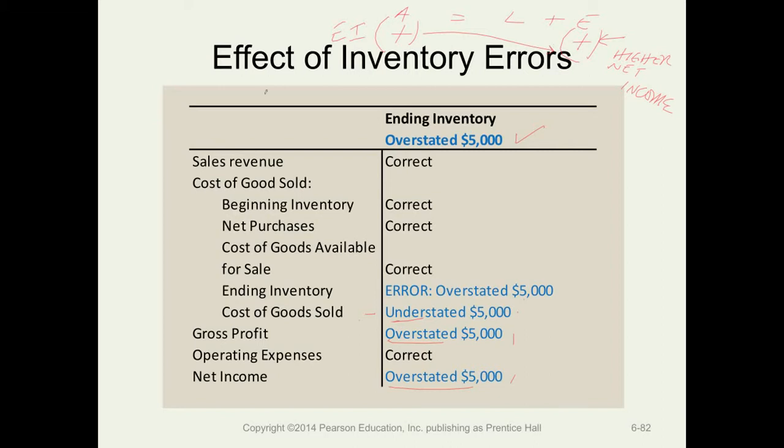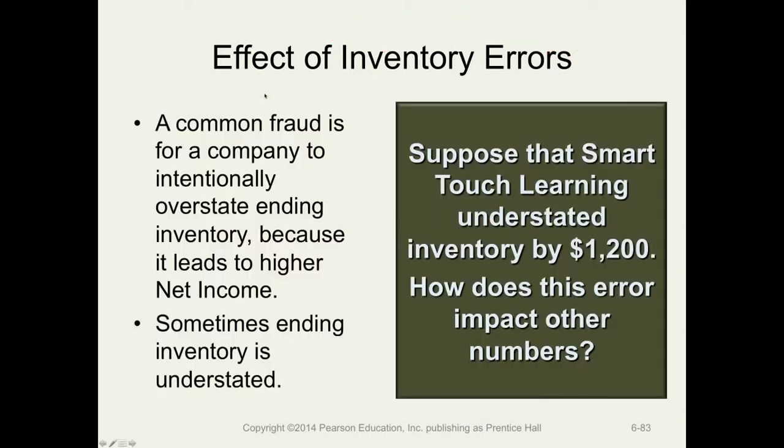A common fraud in business is to overstate inventory, and that would lead to higher income. We can also find cases where inventory is understated — for example, to try to smooth income or create hidden reserves.